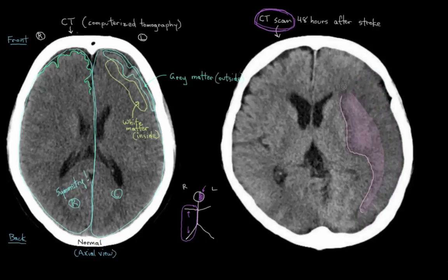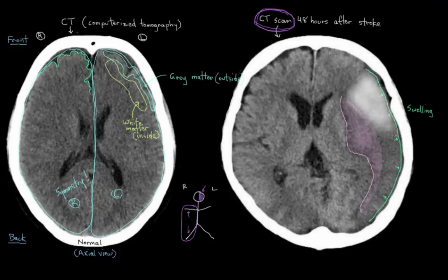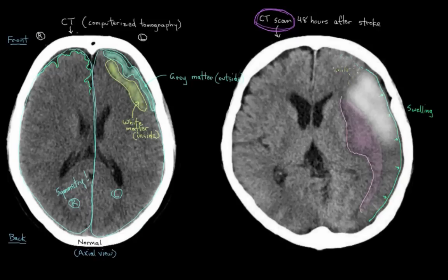In our stroke brain, the nice well-delineated curves of the surface of the brain are not really present anymore because of the swelling. The surface of the brain is starting to look pretty similar to what's underneath, in contrast to the normal side where there's good differentiation between gray matter on the outside and white matter underneath. In the brain with stroke developing, you start to lose this gray-white differentiation — things start to look more the same as each other, and that's another sign of stroke on a CT scan.